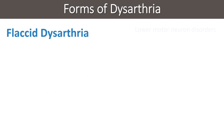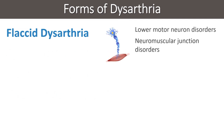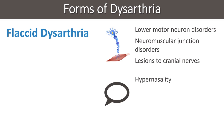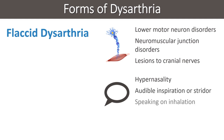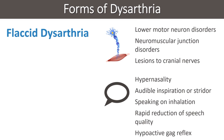Flaccid dysarthria is caused by lower motor neuron disorders, neuromuscular junction disorders, and lesions to the cranial nerves. It presents with hypernasality, audible inspiration or stridor, speaking on inhalation, rapid reduction of speech quality that improves at rest, and hypoactive gag reflex.